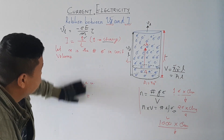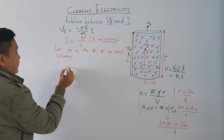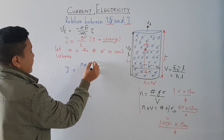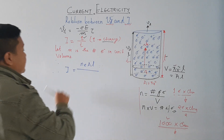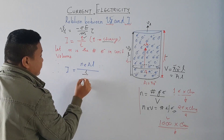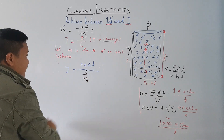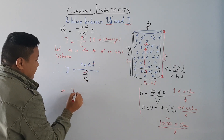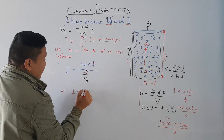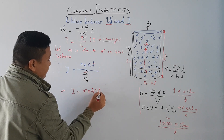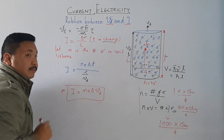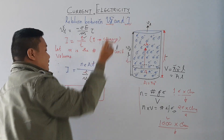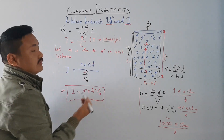Therefore, I equals Q divided by T. Q is N×e×A×L, and T is L divided by Vd. The L in the numerator and denominator cancel, giving I equals N×e×A×Vd. This is the relation between drift velocity and the current.